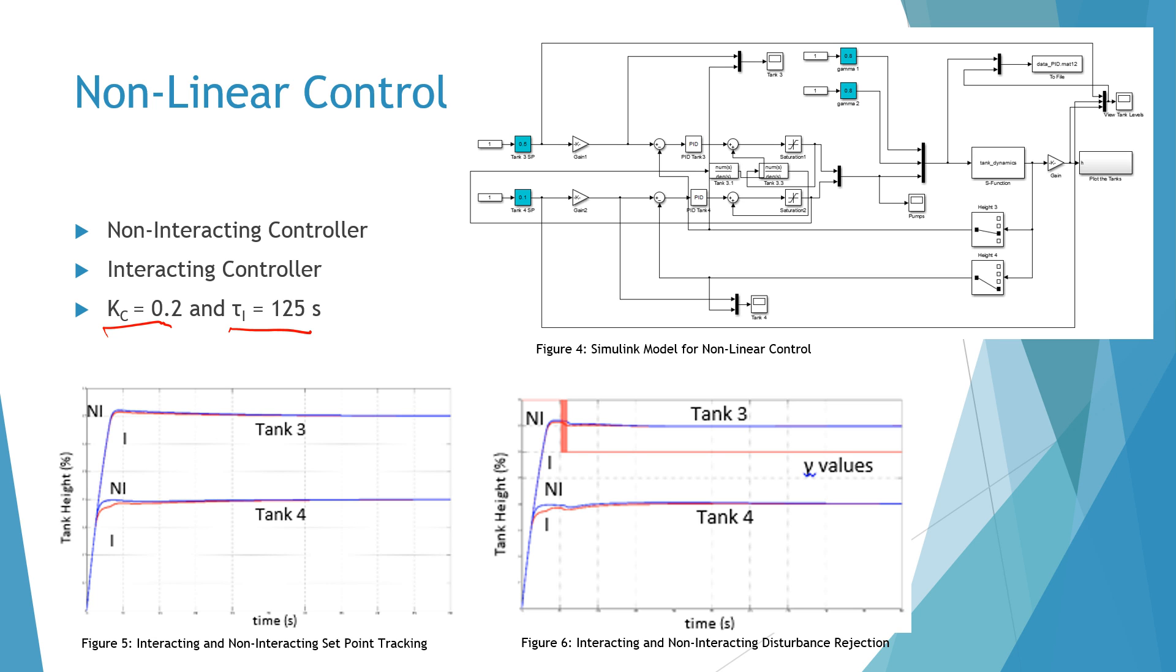We also tested for disturbance rejection and you can see from the graph on the right that for a small gamma value change, both controllers performed very well. We found that these controller parameters were good for both disturbance rejection and set point tracking.